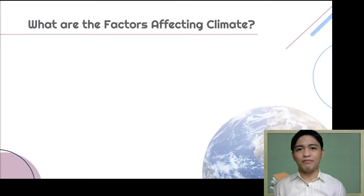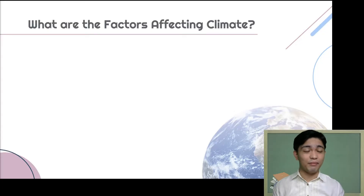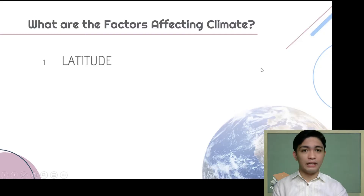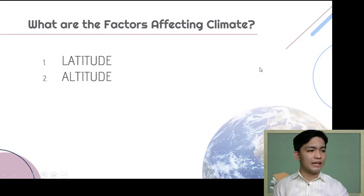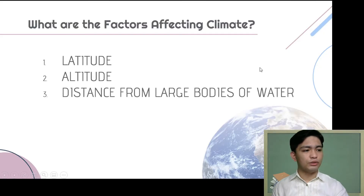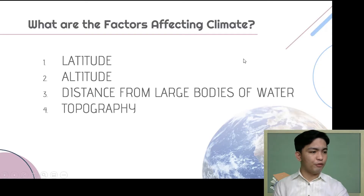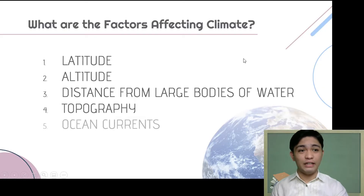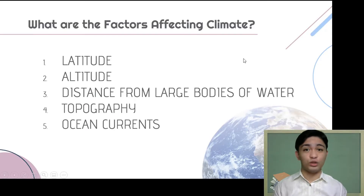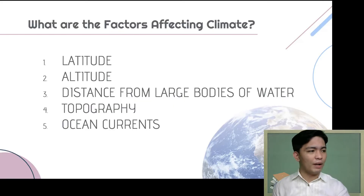As we can see, different places have different climates — even places within the same country may experience different climate. What is the reason behind that? Let us discuss the factors affecting the climate of an area. We have five: first, latitude; second, altitude; third, distance from large bodies of water; fourth, topography; and fifth, ocean currents. Let's have them one by one.